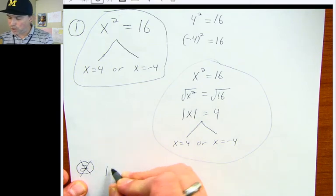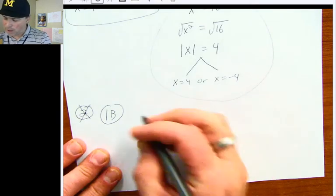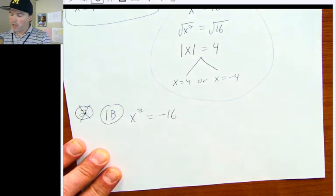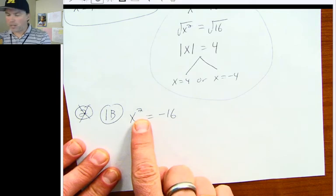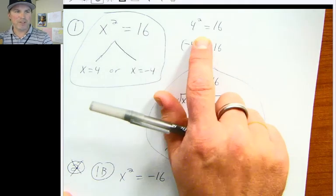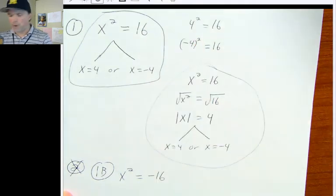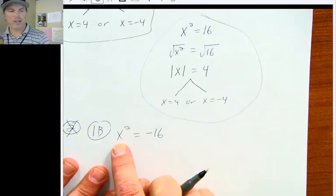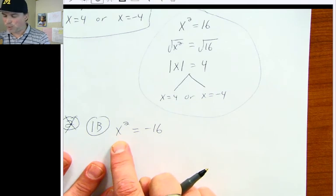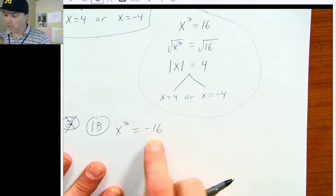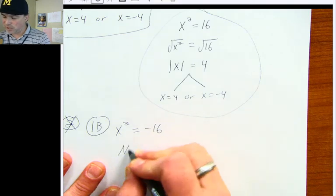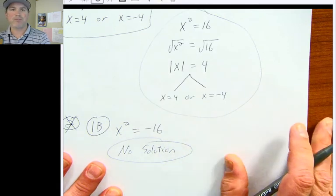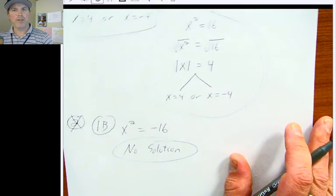Before example two, let's look at example 1b: x squared equals negative 16. Whenever you square a number, a positive times a positive is a positive, and a negative times a negative is also a positive. So it is impossible to square a number and get a negative answer. If you ever have a problem like this, you quickly answer no solution, because you cannot square root a negative number.